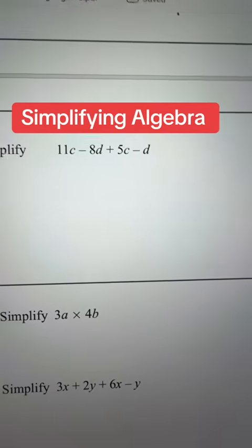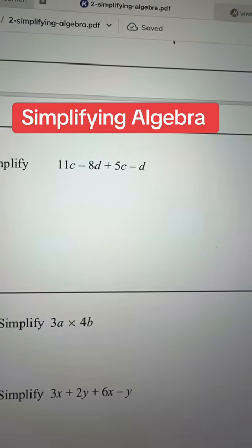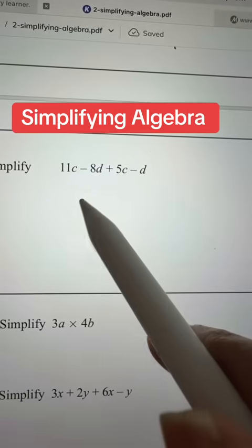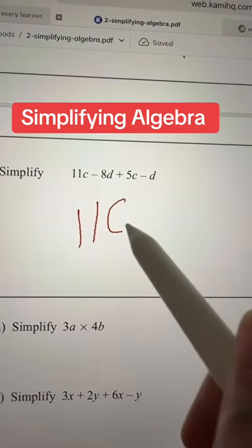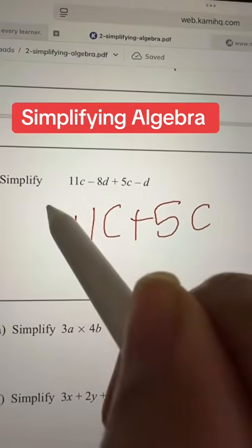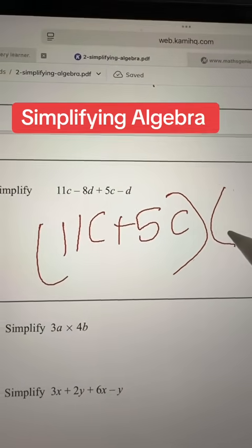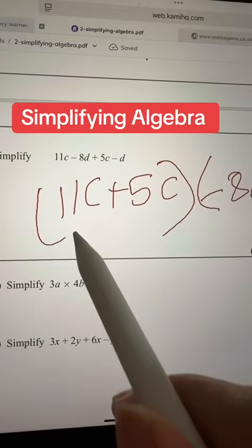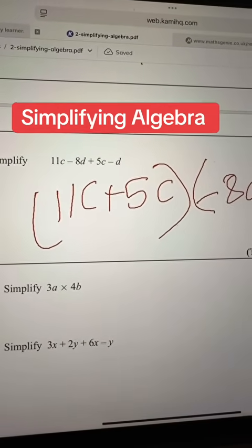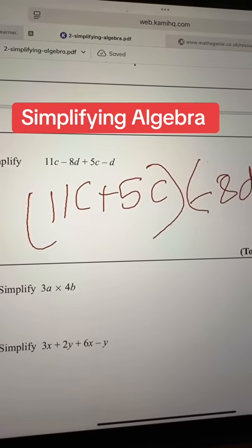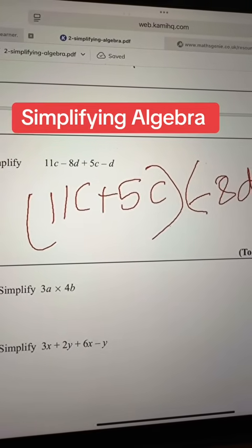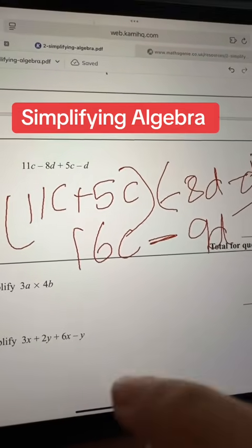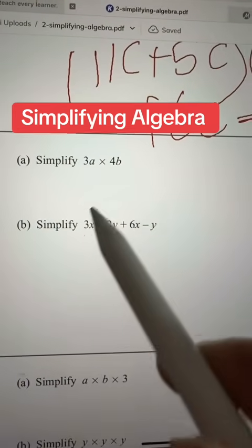Now you have this one here. 11c minus 8d plus 5c minus d. So get all the c's together and get all the d's together. So 11c plus 5c, don't forget to put your bracket so you don't get confused, minus 8d and minus d. 11c plus 5c, add them up 12, 13, 14, 15, 16. So 16c minus 9d. We are adding them up but we are putting the same sign.